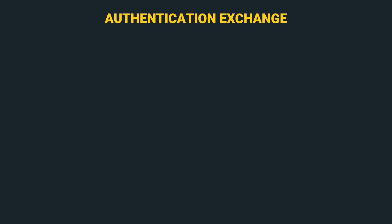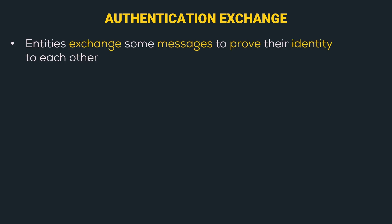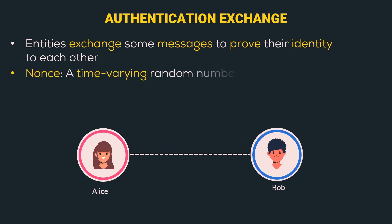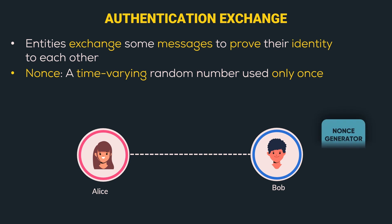Now let's move to the next mechanism, which is authentication exchange. In authentication exchange, entities exchange some messages to prove their identity to each other. Here Alice first gives her address to Bob. After receiving Alice's address, Bob generates a nonce. A nonce is a time-varying random number that is used only once. Bob uses a nonce generator to generate a one-time nonce, let's call it RB, and sends it to Alice.